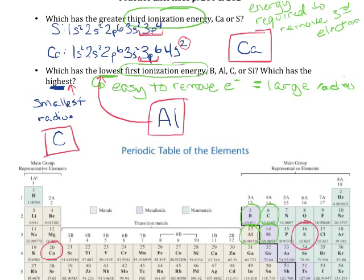When you're doing ionization energy trends, you need to do more than just say it's to the right in the periodic table or further down. You have to explain why. I think it's easiest to explain the ionization energy trend in terms of the radius trend: atoms that are small hold onto their electrons tightly, requiring a lot of energy to remove them, so they have high ionization energies. On the other hand, atoms with a large radius have electrons far from the nucleus — they're not held tightly — so they have lower ionization energies. The trends for ionization energy and radius are opposite.